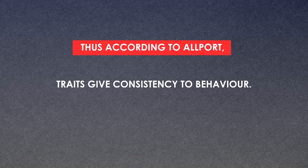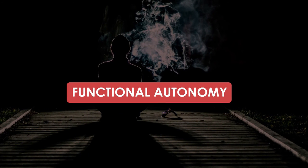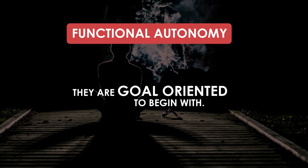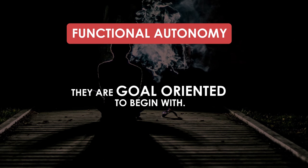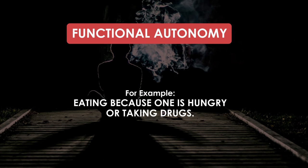Traits give consistency to behavior generally, but they are not always fixed — there may be instances of inconsistency. Another concept Allport gives us is functional autonomy: functions or means which once served a purpose may attain autonomy at a later stage. Initially they are goal-oriented, but later they become functionally autonomous when the goals are attained. For example, if you are hungry you eat something — the behavior is goal-oriented. But if you like what you've eaten, you tend to eat it again and again; you are eating not because you are hungry but because it gives you happiness, satisfaction, and comfort. Likewise, drugs may initially be taken to reduce pain or induce sleep, but later the person takes drugs just for the sake of it. This is functional autonomy.